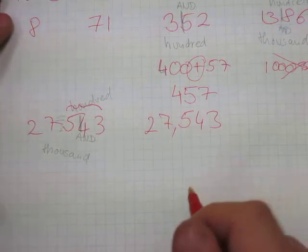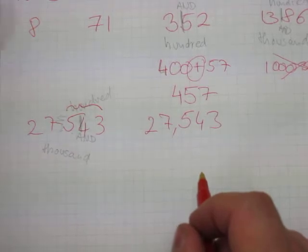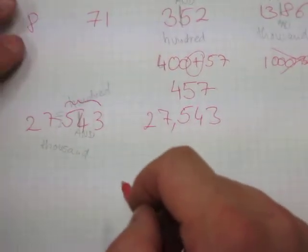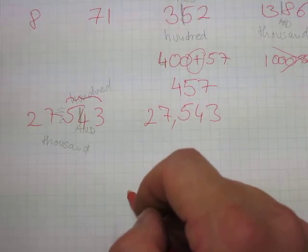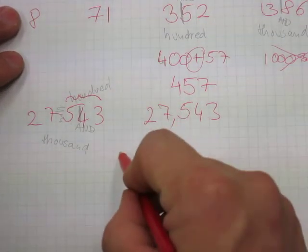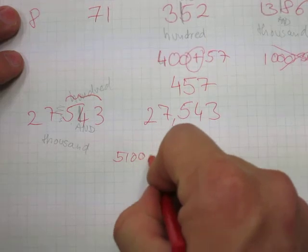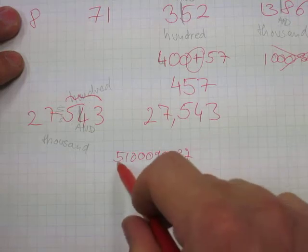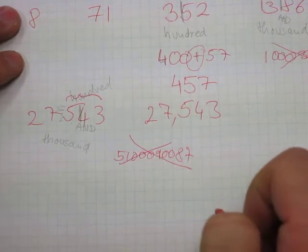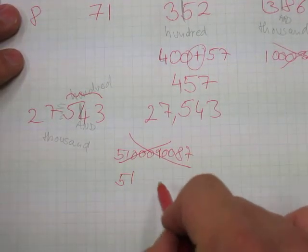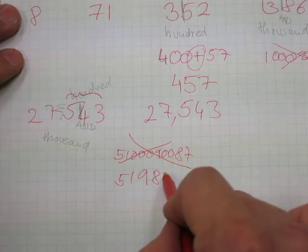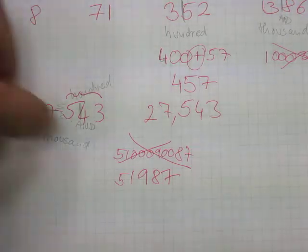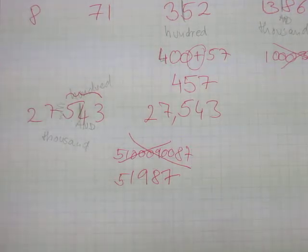And when you hear a five-digit number like 51,986, you don't write down the full spoken form word by word — that's incorrect. You write down 51,986 as digits. That's how the numbers are written down.